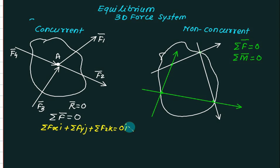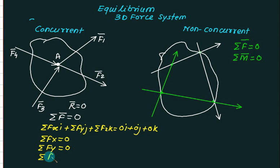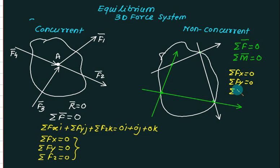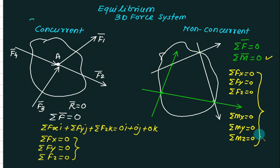Setting this equal to zero gives zero·i plus zero·j plus zero·k, so we can form three equations: Fx equal to zero, Fy equal to zero, and Fz equal to zero. From a concurrent system, we can find at most three unknowns. For a non-concurrent system, we have the same three force equations plus moment equations: summation of Mx zero, summation of My zero, and summation of Mz zero - meaning we can handle six unknowns.